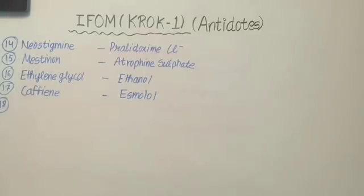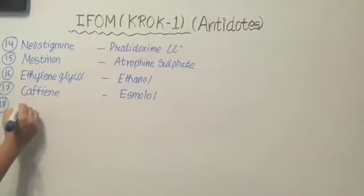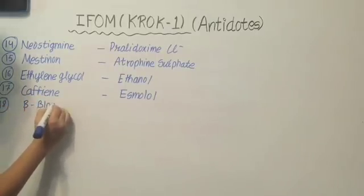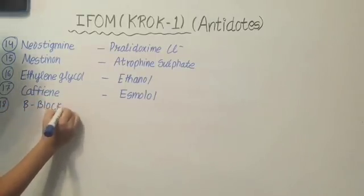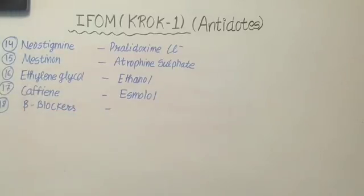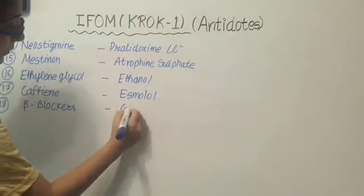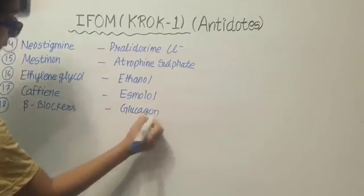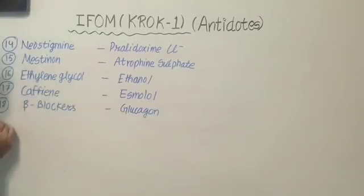Our 18th drug is beta blockers. The antidote of beta blockers is glucagon. Our 19th drug is barbiturates.